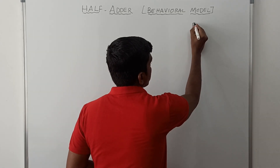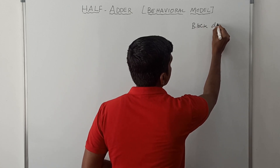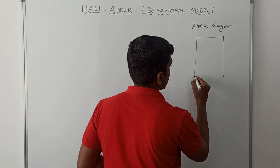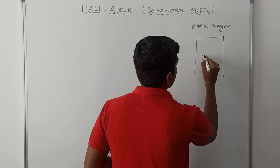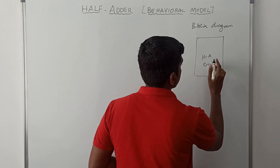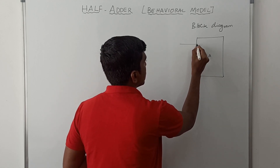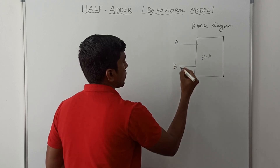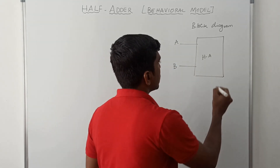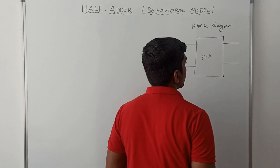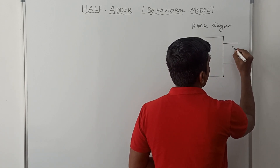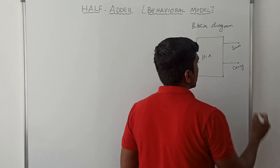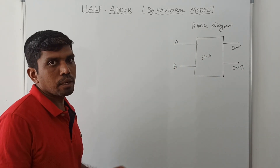Let me draw the block diagram of the half adder circuit. It's a simple block diagram of a half adder. It has two inputs, namely called A and B. This half adder circuit produces two outputs: the first output is called sum and the second output is called carry.